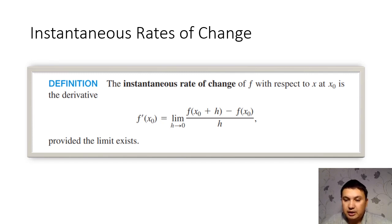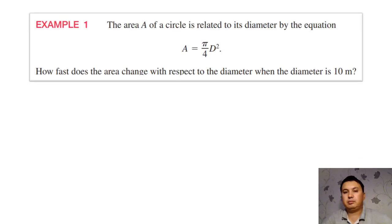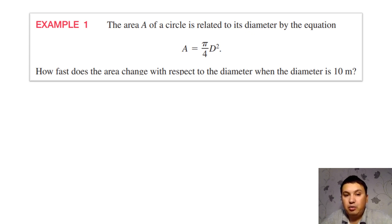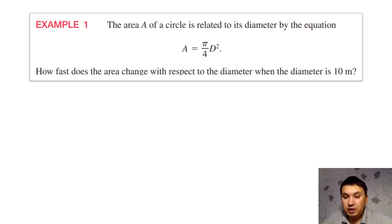So indeed, that's what we are doing now. Let us do an example. Given the area of a circle in terms of its diameter, we would like to find how fast does the area change with respect to the diameter when the diameter is 10 meters.